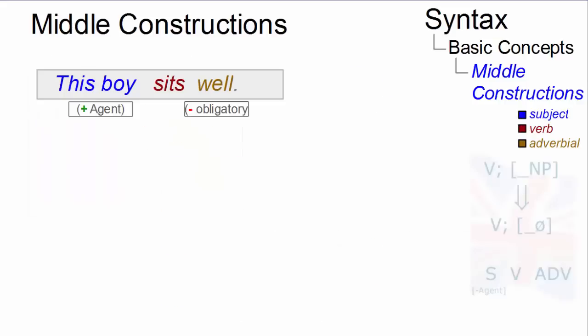In this standard sentence, this boy sits well, this boy is an agentive subject, sit the verb, and well, an optional adverbial.